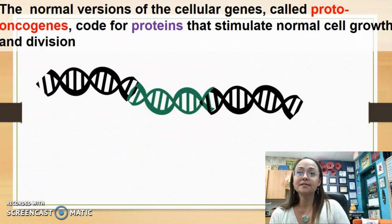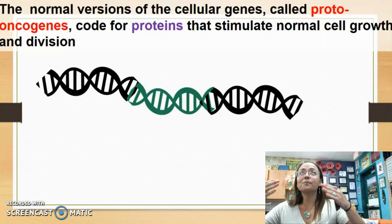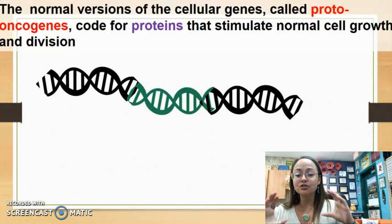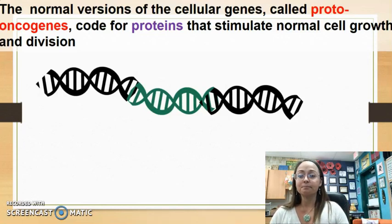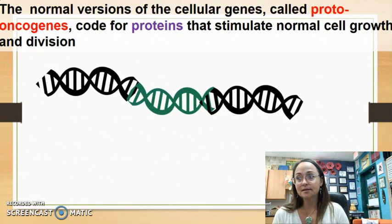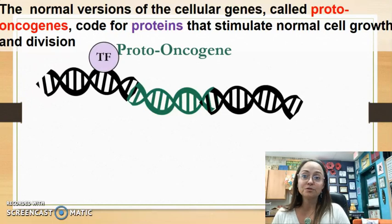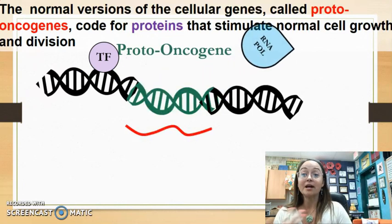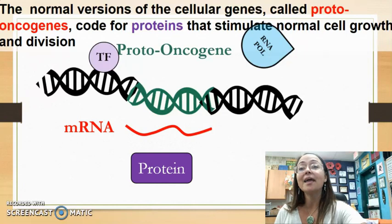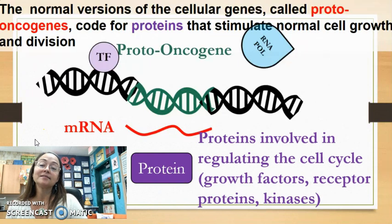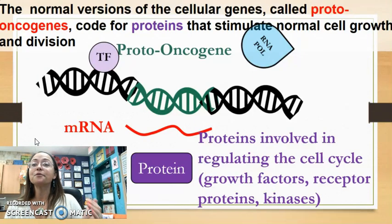Normal versions of genes that are part of normal cell division and cell growth — whether coding for growth factors, receptors, or molecules within the cell like cyclin-dependent kinases or relay proteins — are called proto-oncogenes. Transcription factors turn on gene expression for these proto-oncogenes; they are transcribed and translated, and the protein products are proteins involved in regulating the cell cycle, such as growth factors and receptors.